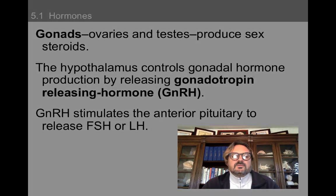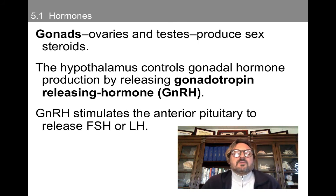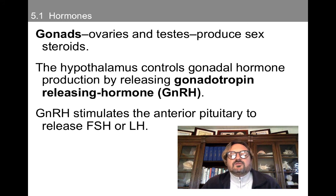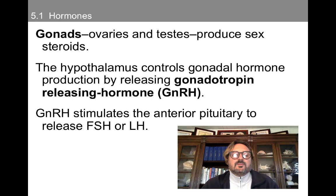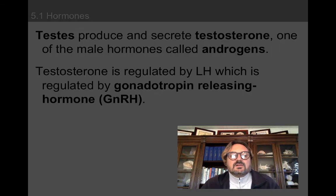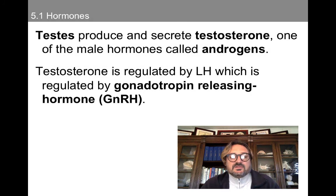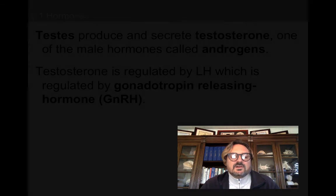Finally, the sex hormones: the gonads — ovaries and testes — produce sex hormones, and the hypothalamus controls gonadal hormone production by releasing gonadotropin-releasing hormones, which stimulate the anterior pituitary to release follicle-stimulating hormone or luteinizing hormone. The testes produce and secrete testosterone, one of the male hormones called androgens, and testosterone is regulated by luteinizing hormone, which is regulated by gonadotropin-releasing hormone.